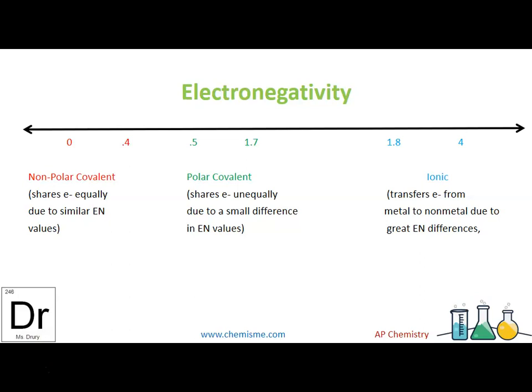And if they're anything higher than that, we're going to consider it ionic because it transfers electrons to form cations and anions due to that really big difference in polarity.